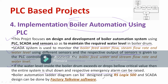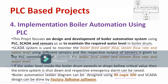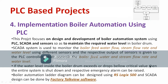The boiler automation ladder diagram can be designed using RSLogix 500 software, and the SCADA system can be designed using FactoryTalk View or any other software. These are important suggestions for project implementation. Boiler automation can be done using PLC and monitoring with SCADA — you can use it for MTech or MBA level projects.